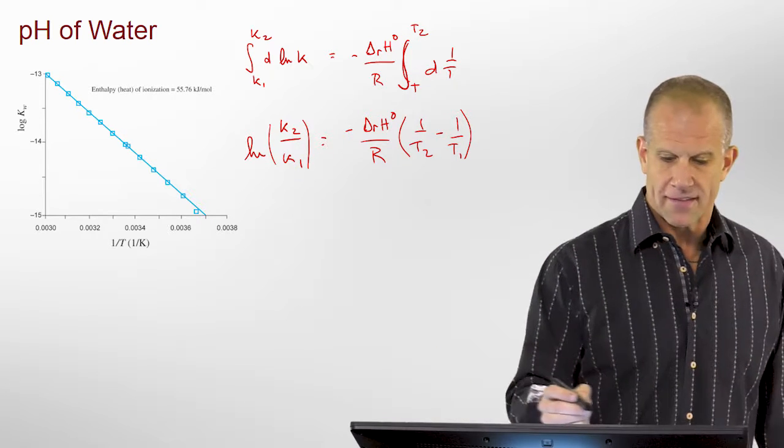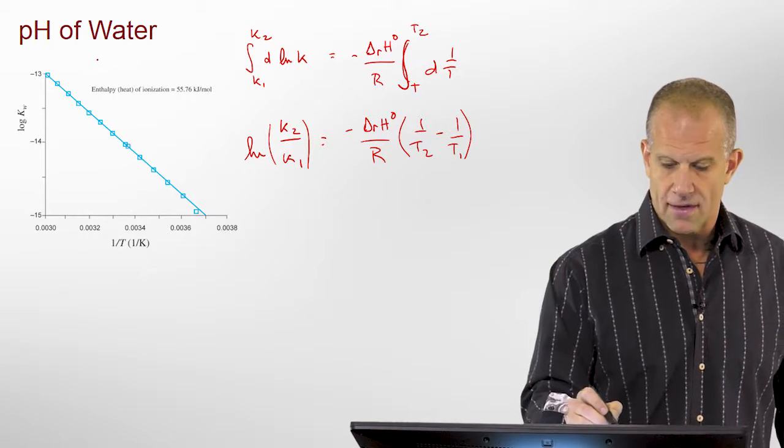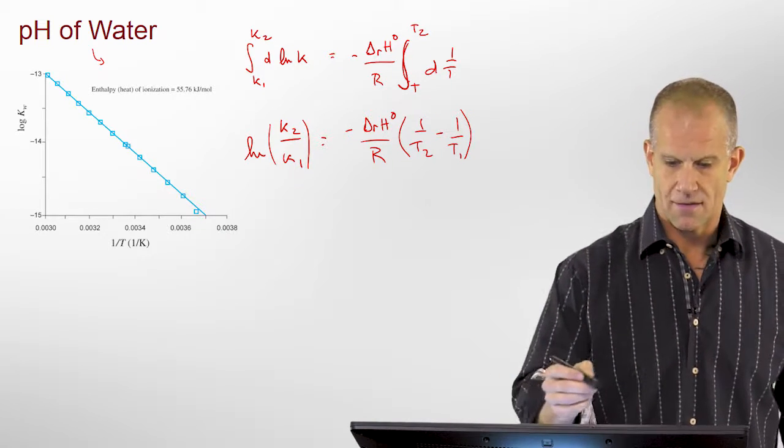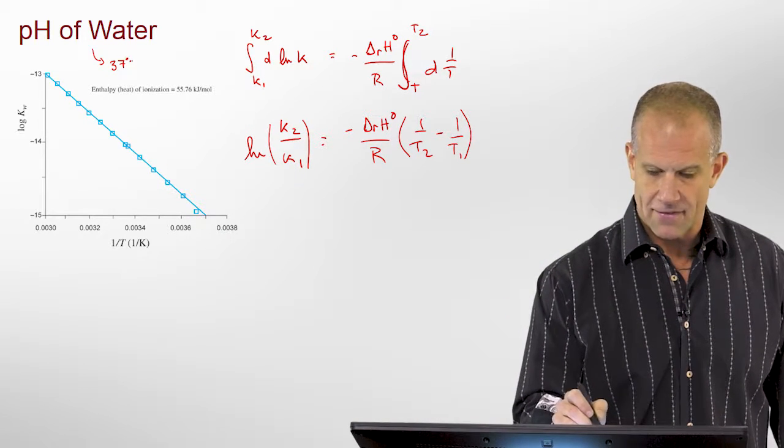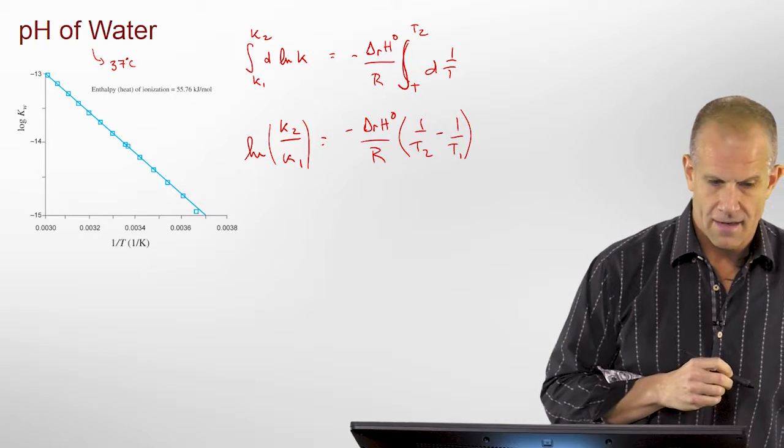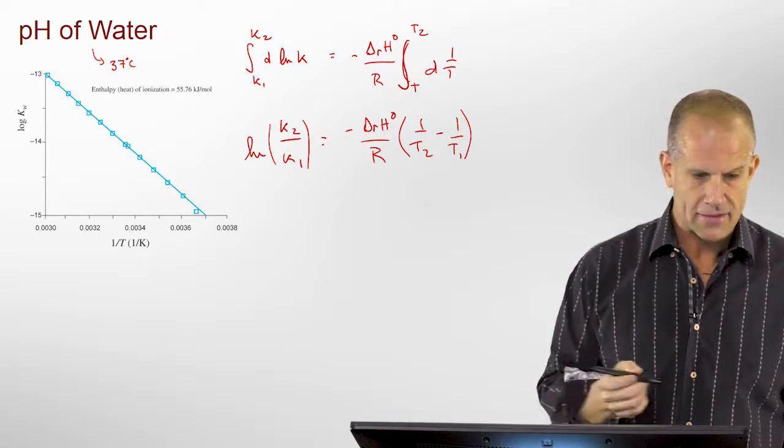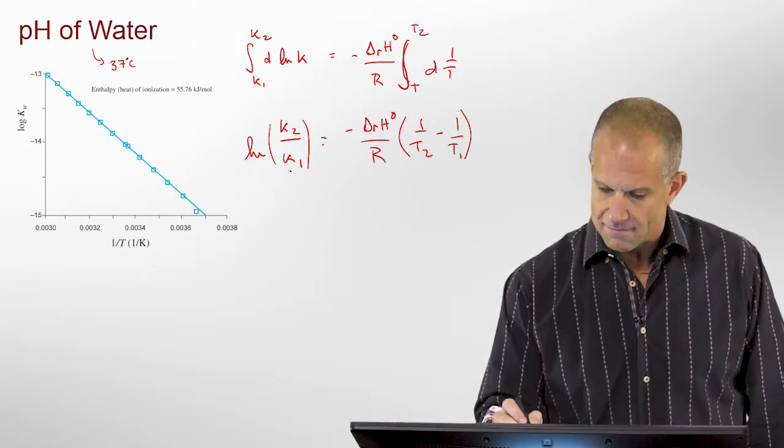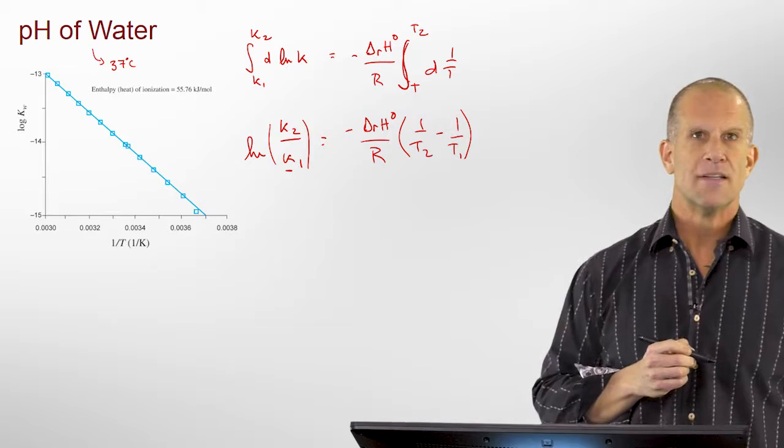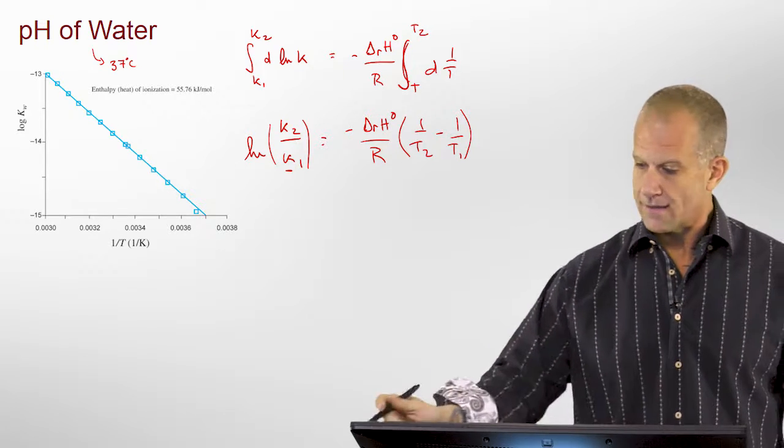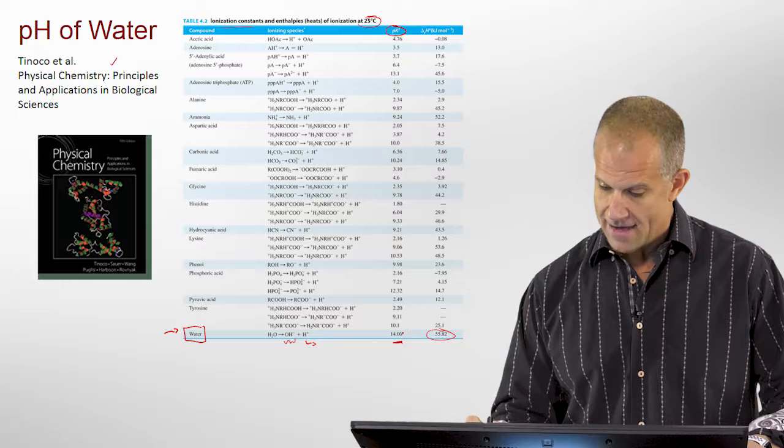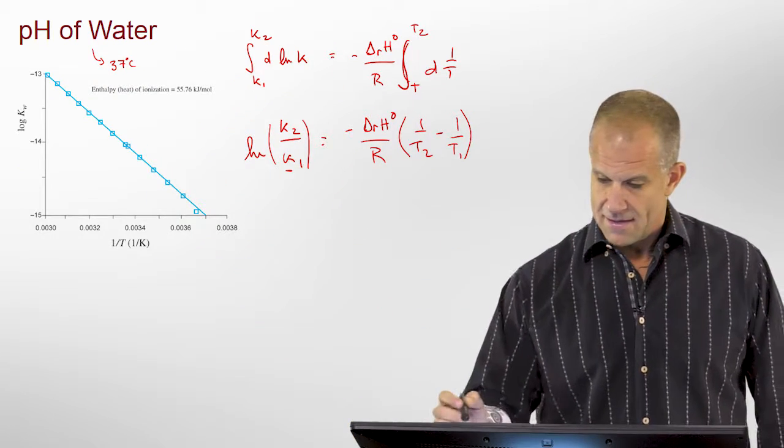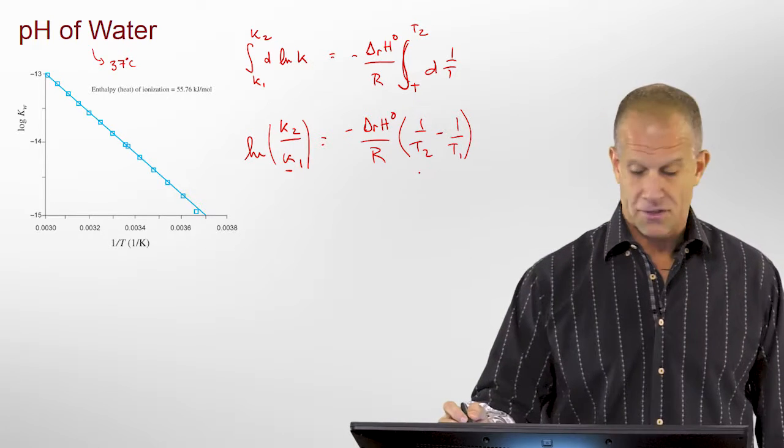So, say, for example, we wanna know the pH of water at physiological temperature, or body temperature, which is 37 degrees Celsius, in this case. So, we know K1, we know the equilibrium constant at 298, we know our final temperature, 310 Kelvin, we knew our initial temperature, 298, which is the standard state.